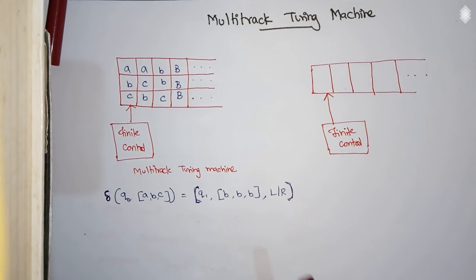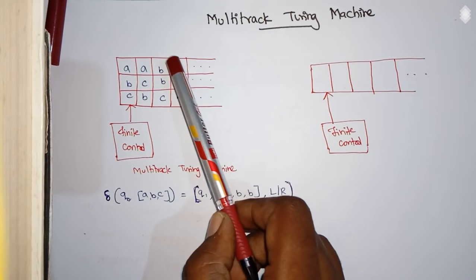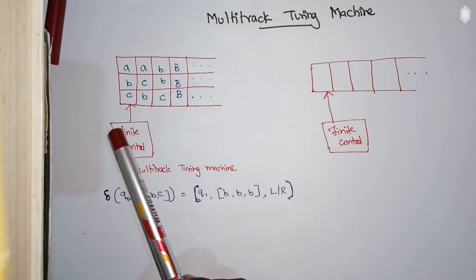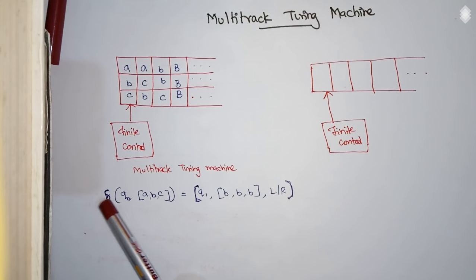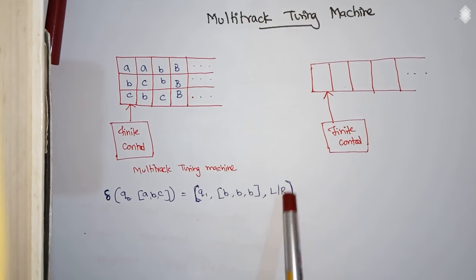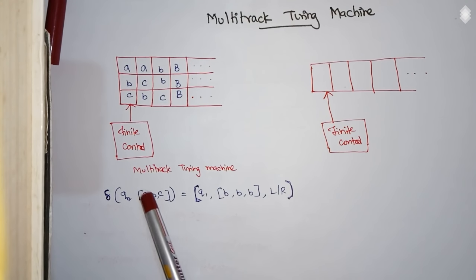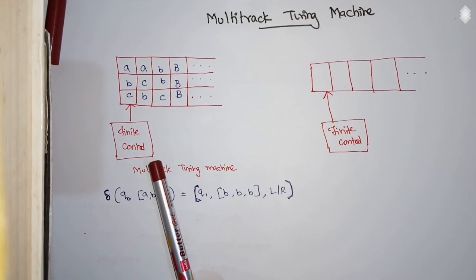Whereas a multi-track Turing machine is one where a single tape is divided into tracks, and each cell of the track is capable of storing one input element at a time. The transition over here is again going to have a single finite control and single read/write head. So here the transition function is written as a transition of a state on a set of inputs — it reads all the tracks at a time and based on that, it makes a transition.